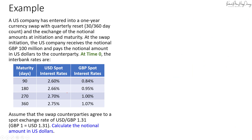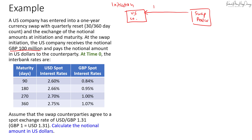Next, we calculate the notional amount of the other leg of the swap. We know one leg has a notional of 100 million pounds. The US company exchanges with the swap dealer: the US company receives 100 million pounds and must pay an equivalent amount in US dollars. Using the initiation spot exchange rate of 1 pound = 1.31 US dollars, the notional of the other leg is 131 million dollars.